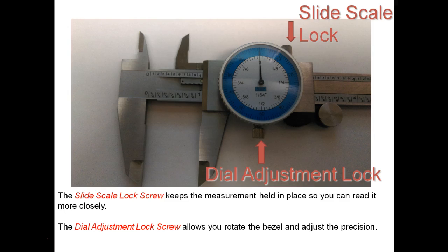The other screw is on the bottom, this is known as your dial adjustment lock. Dial adjustment lock screw allows you to rotate the bezel and adjust the precision. The bezel, this is the outside of the dial itself here. And I'll show you why it's important.